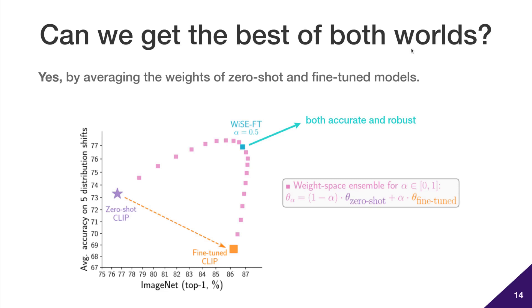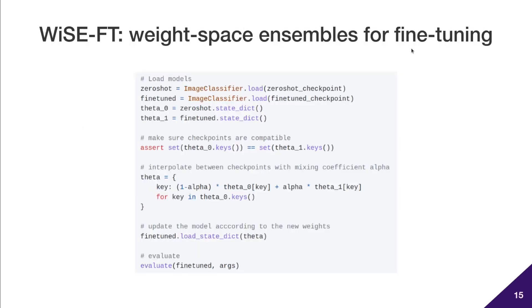By simply averaging the weights of the zero-shot and fine-tuned models, we obtain a model that is both accurate and robust. Our procedure is very simple and can be implemented in just a few extra lines of pytorch code, as you can see in this slide.